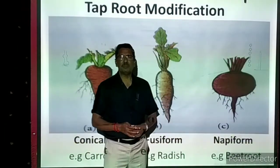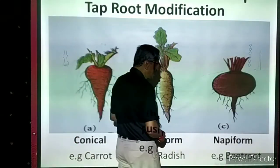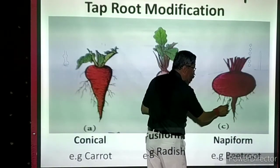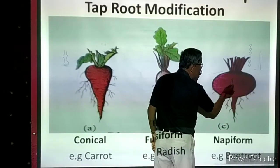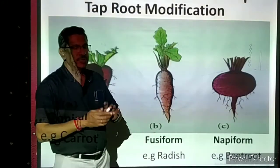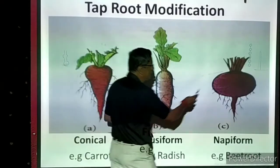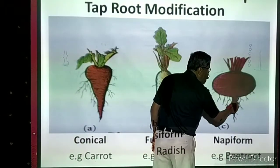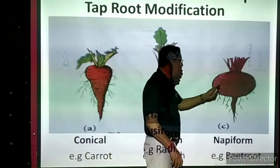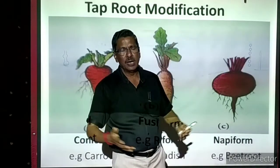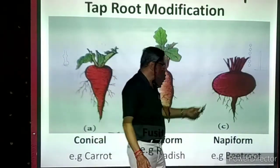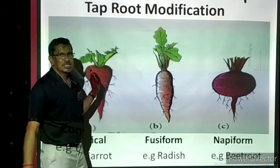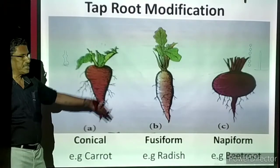The third is napiform modification. The upper part of the primary root — approximately 50 to 60 percent — stores food and becomes very bulgy, while the lower part of the primary root remains normal. The name napiform comes from Latin meaning abnormally stouter. Only the upper part becomes abnormally thicker. Example is beetroot.